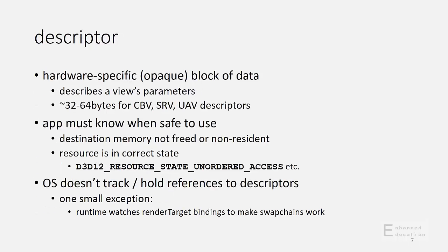A descriptor is the atomic unit of binding in the DX12 API. It's just a chunk of data in a hardware-specific format somewhere in memory. As an application, you can ask hardware to create a descriptor with various parameters — like if you're making a shader resource view, you would specify what resource you're making a view on and which mipmaps in the resource you want the view to contain. That information is encoded by the hardware into a descriptor. When you use a descriptor and ask a shader to reference a given descriptor to look at a texture, it's your burden as an application to make sure that the descriptor is valid at the moment a shader on the GPU is executing and references the descriptor. The memory it's pointing to has to still be present, not freed or not made non-resident.